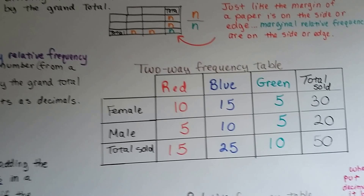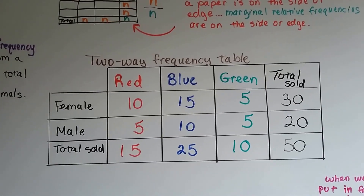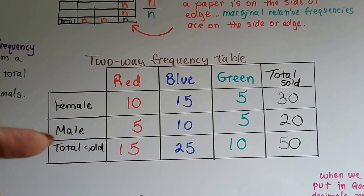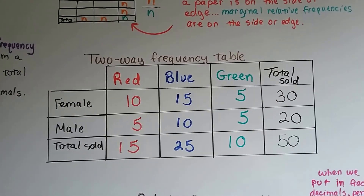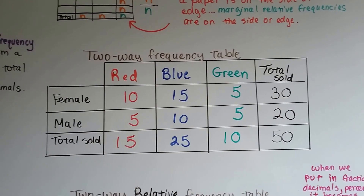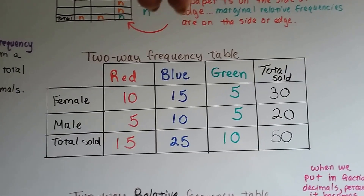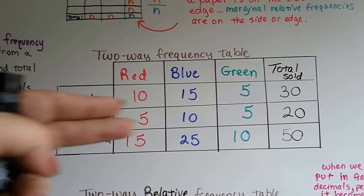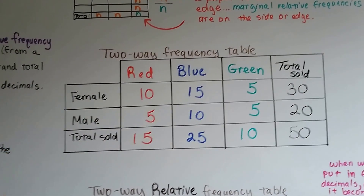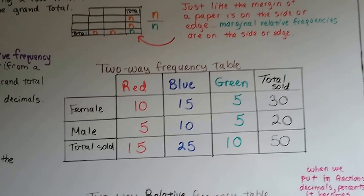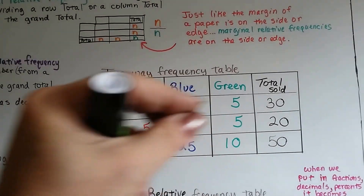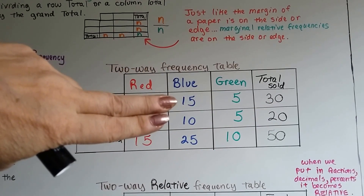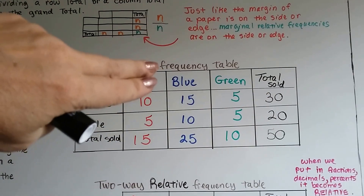Here's a two-way frequency table. We're still doing our t-shirts - red, blue, and green t-shirts that were sold, and the females and males that purchased them. This is just a plain old two-way frequency table with just the frequencies in it. It's two-way because we've got two different sets of data: the color of the t-shirts and what gender purchased them. If it was just a regular frequency table, it would just say red 15, blue 25, green 10.